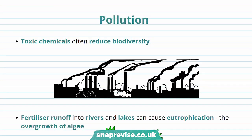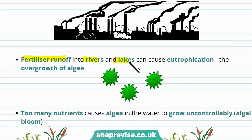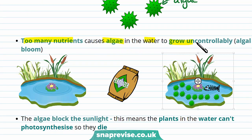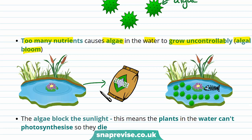In part one of this video, we discussed biodiversity and why we need high levels of it, as well as some of the ways human activities can decrease biodiversity. Another human activity that can decrease biodiversity is pollution, because toxic chemicals — often produced by industrial processes such as factories — reduce biodiversity. Water pollution can involve fertiliser runoff into rivers and lakes, which can cause eutrophication — the overgrowth of algae. Too many nutrients cause algae in the water to grow uncontrollably, which is called an algal bloom.